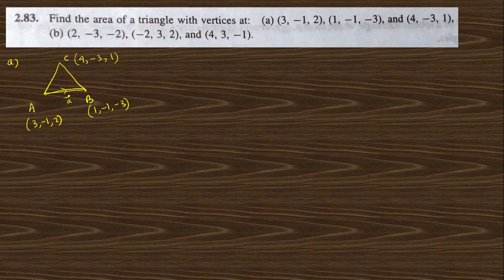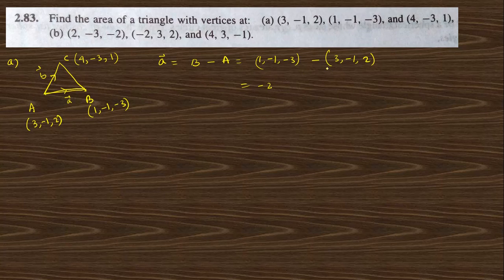We take vector a as AB, which is the coordinates of B minus the coordinates of A. So: (1−3, −1−(−1), −3−2) = (−2, 0, −5). This can be written in vector form as −2i cap + 0j cap − 5k cap.